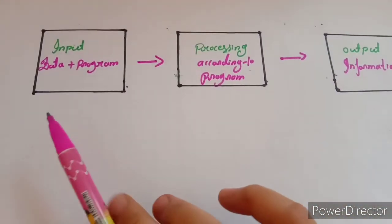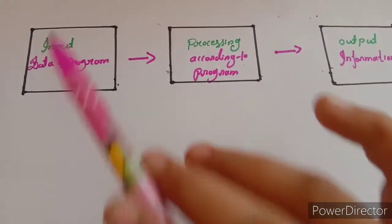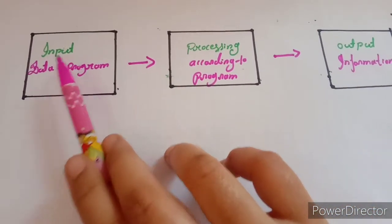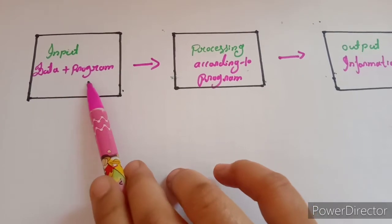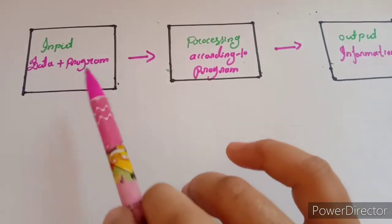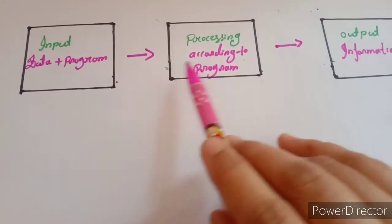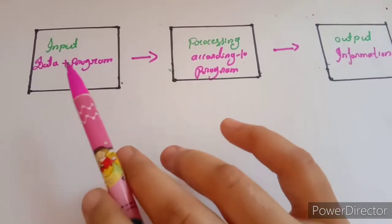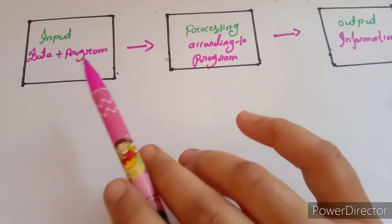In computer terminology, input, processing, and output can be defined as follows. Input is data plus program. Data entered into a computer is called input. It could be numbers, letters, pictures, or even sounds. A set of logical instructions given to a computer to perform a task on the data is called a program.